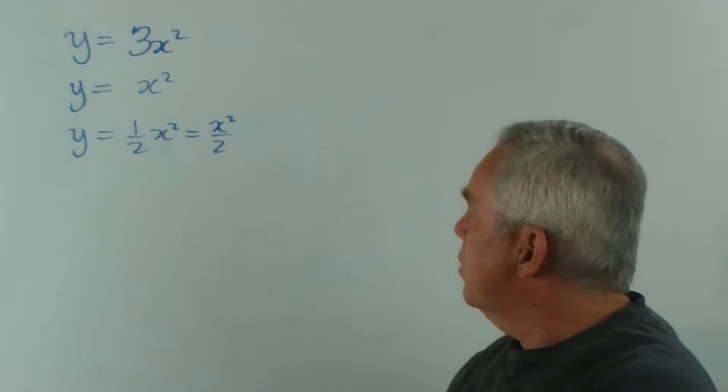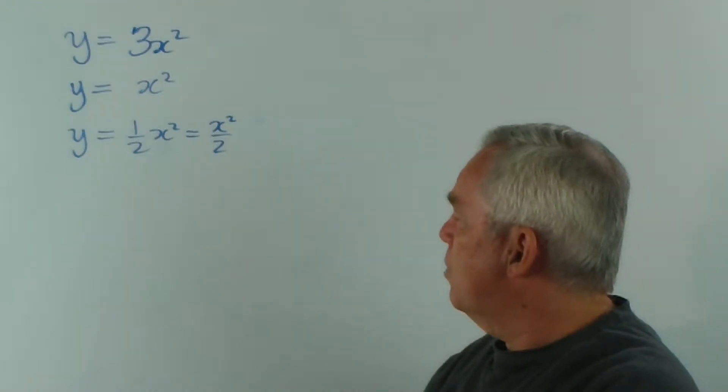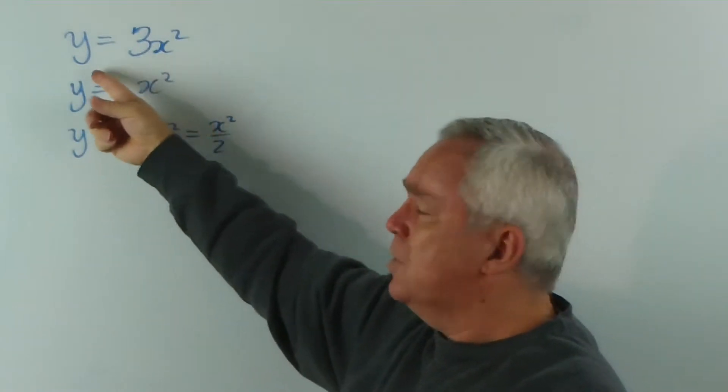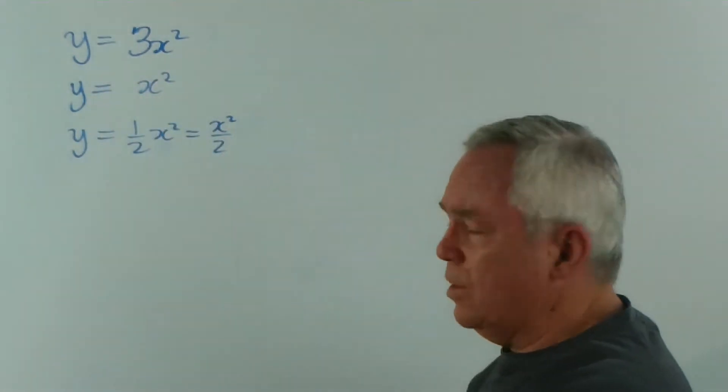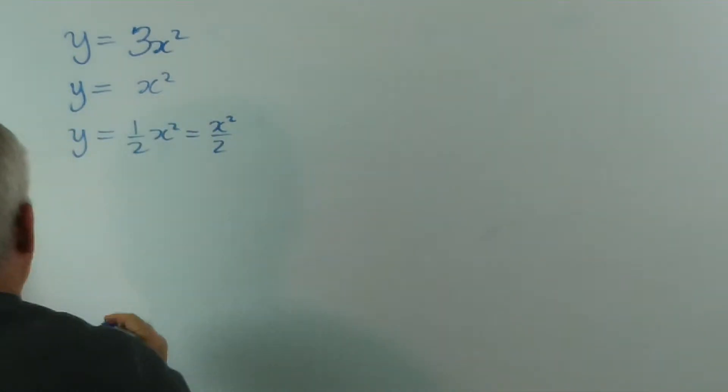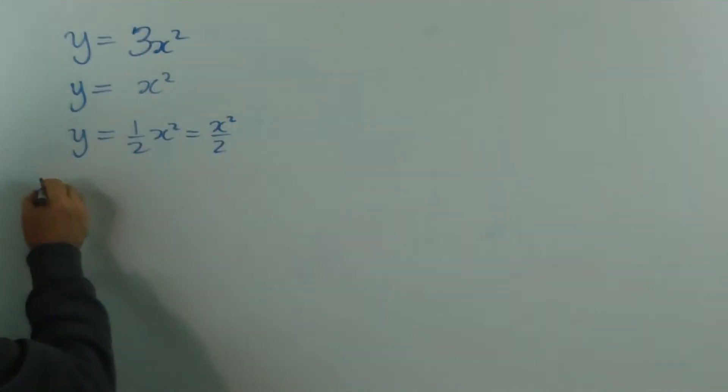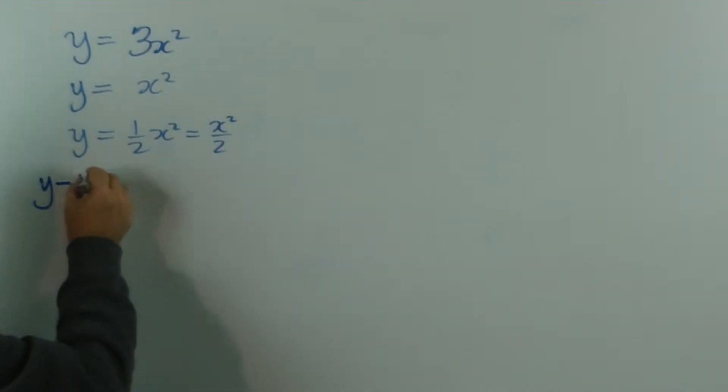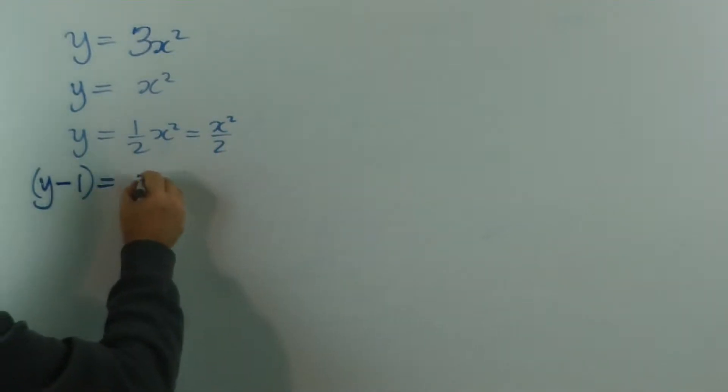Now, what we're going to do is learn to graph parabolas that are not like this, that are not centred on the origin, but are in fact centred somewhere else on the graph. And this is how it happens. If I alter the y-value, for example, by subtracting 1, and if I alter the x-value, let's say by adding 2.